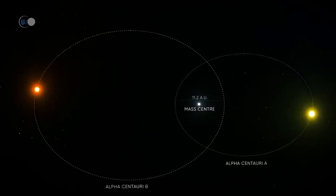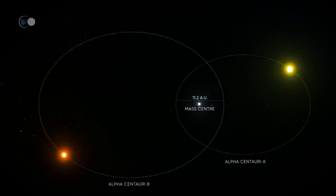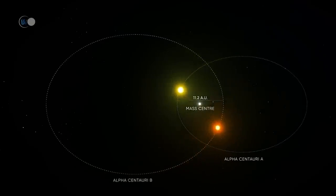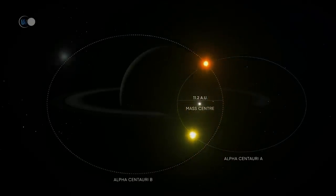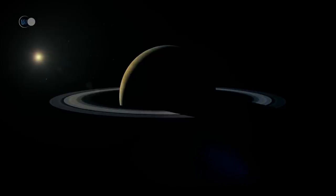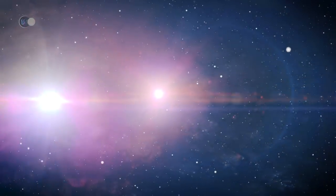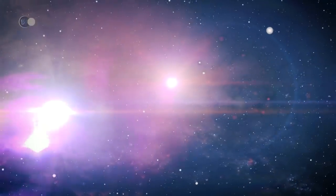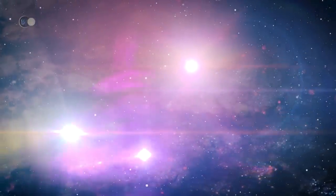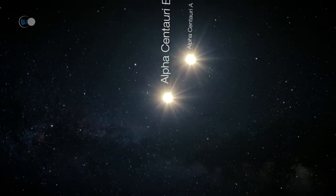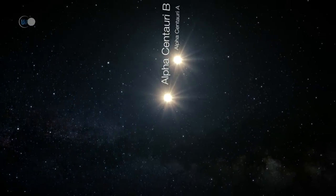These two stars orbit each other in 80 years. Their orbits, slightly eccentric, bring them closer to each other by 11.2 astronomical units, or about 1.68 billion kilometers, which is the distance between the Sun and Saturn. When they move away, they can be up to 35.6 astronomical units, or 5.33 billion kilometers, or 3.1 billion miles, which is equivalent to the distance between Pluto and our Sun.